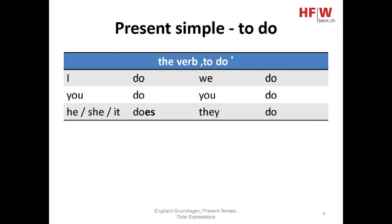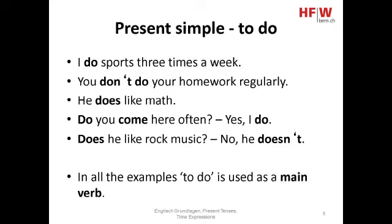With 'to do': I do, you do, he/she/it does, we do, you do, they do. Examples: I do sports three times a week. You don't do your homework regularly. He does like math. Do you come here often? Yes, I do. Does he like rock music? No, he doesn't. In all these examples, 'to do' is used as a main verb.